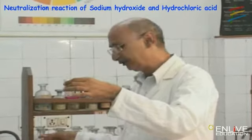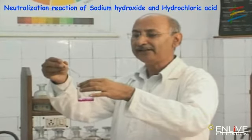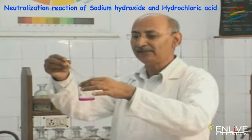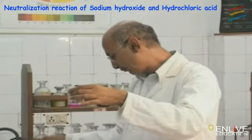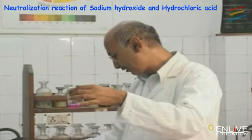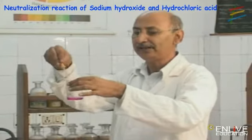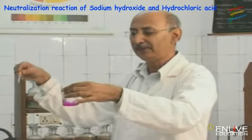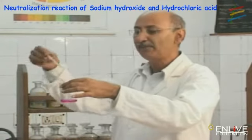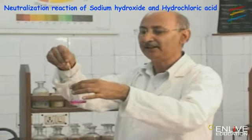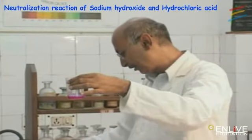It shows that NaOH is there in this beaker. Now I am going to add HCl with the help of the burette. You see the color will become lighter and lighter. We keep on adding hydrochloric acid till it becomes colorless.